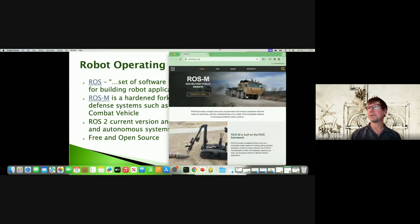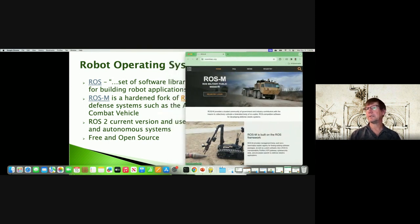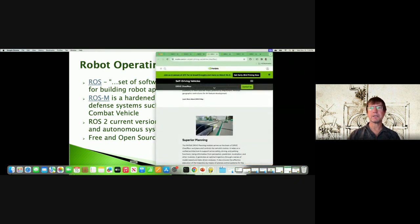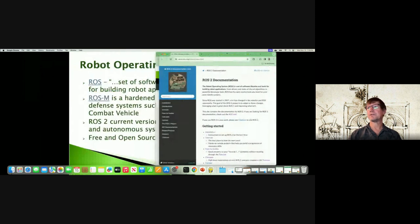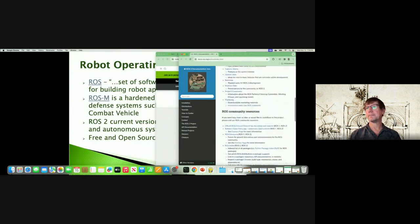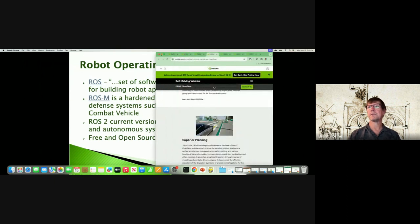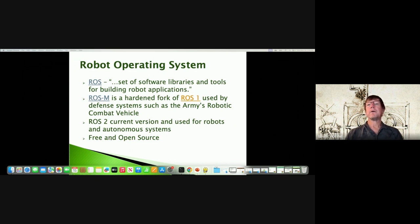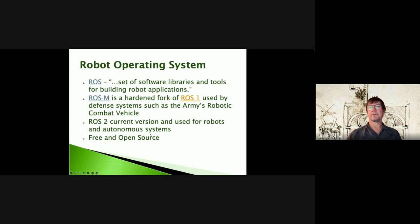The general public doesn't get direct access to ROS-M — you have to show you're a US citizen and agree not to divulge it. ROS 2 has documentation you can access via link. If you're starting a new project, you definitely want to use ROS 2 unless you're working on a defense-related application. And it's free and open source — most of us like that.